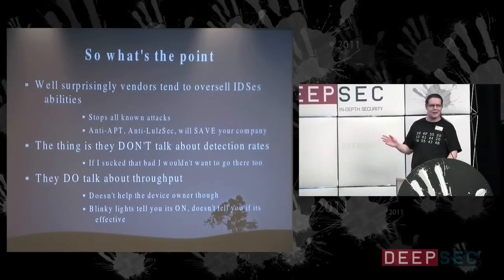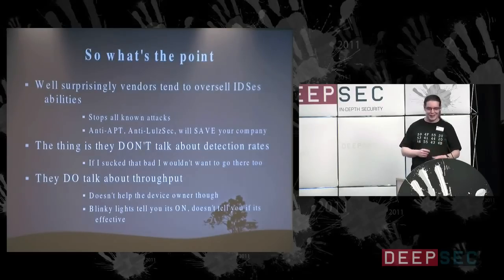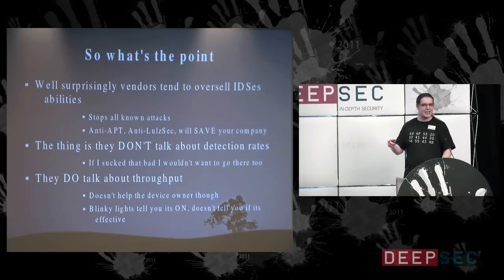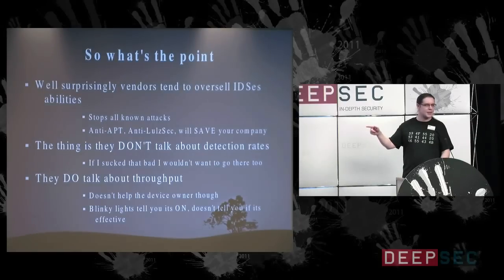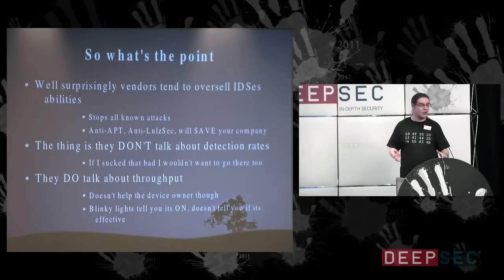Blinking lights tell you the box is on, but they don't tell you it's effective in any way, shape, or form. A lot of device owners are not sure about the quirks of their boxes, and it's those little quirks that can be quite dangerous. There's a box I've heard of that will not inspect new network devices unless it has first been scanned by that device — so that's the burglar knocking on your front door and saying, 'I'm going to break in through that window, could you please keep an eye on it?' — well done.